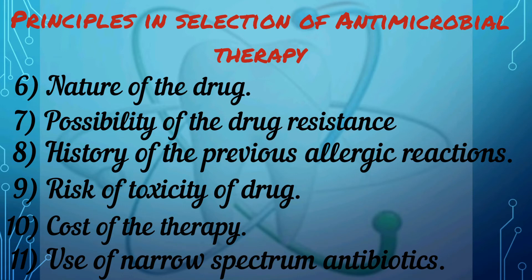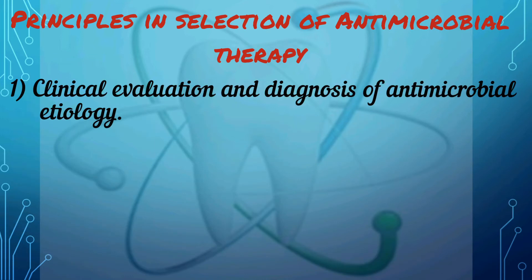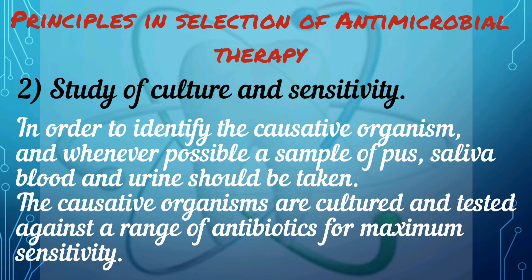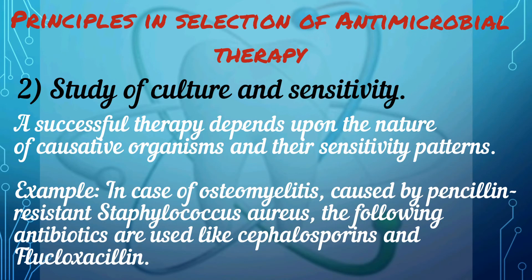Let's go deep into each principle. First is clinical evaluation and diagnosis: a clinician should evaluate the patient, diagnose the infection, and prescribe an appropriate antibiotic based on the type of microorganism causing it. The second principle involves culture and sensitivity — whenever possible, samples of pus, saliva, blood, and urine should be taken. Causative organisms are cultured and tested against a range of antibiotics, since successful therapy depends on the nature of the causative organisms and their sensitivity patterns.